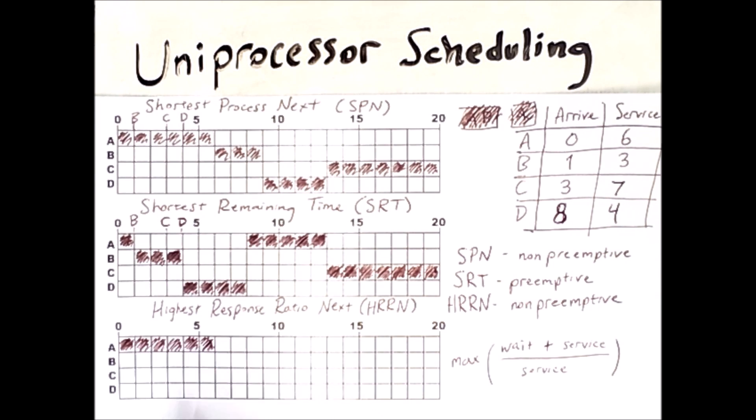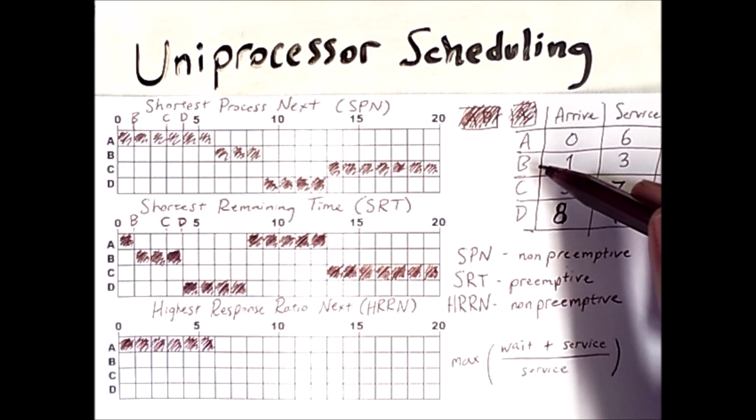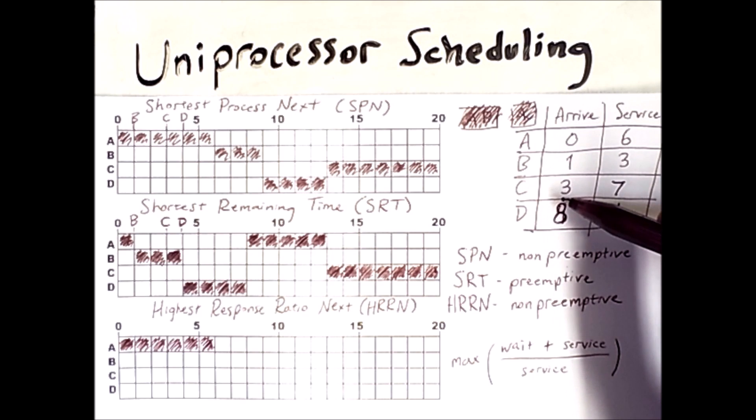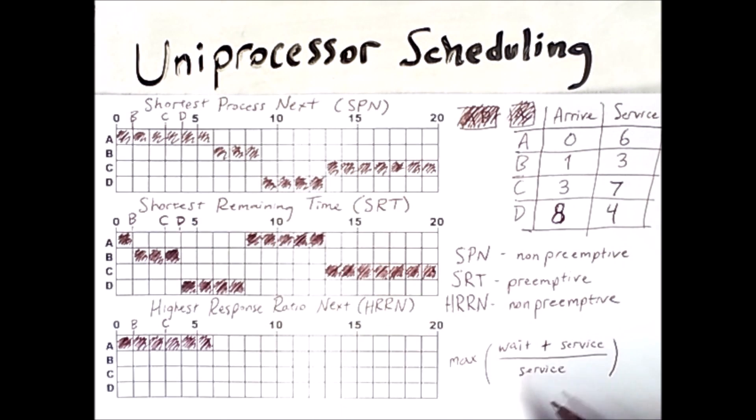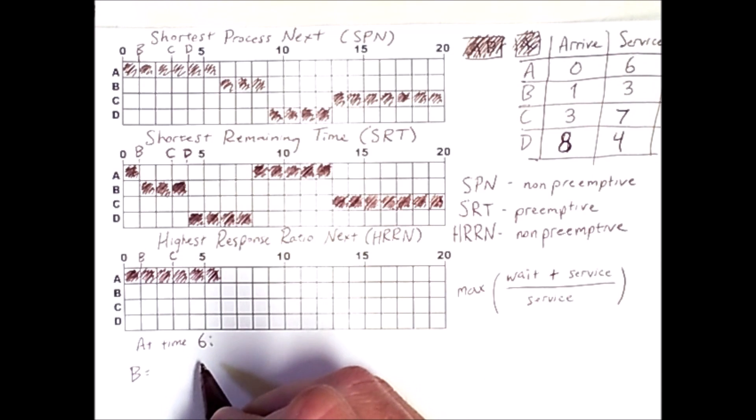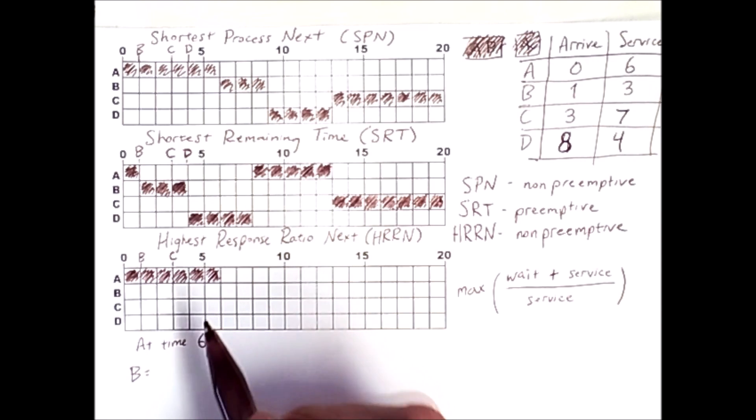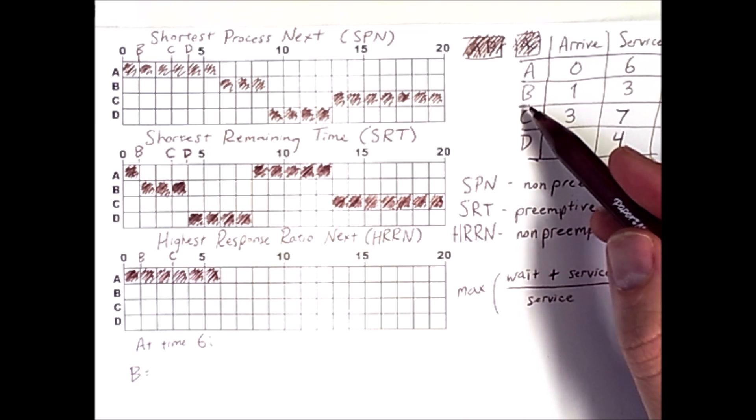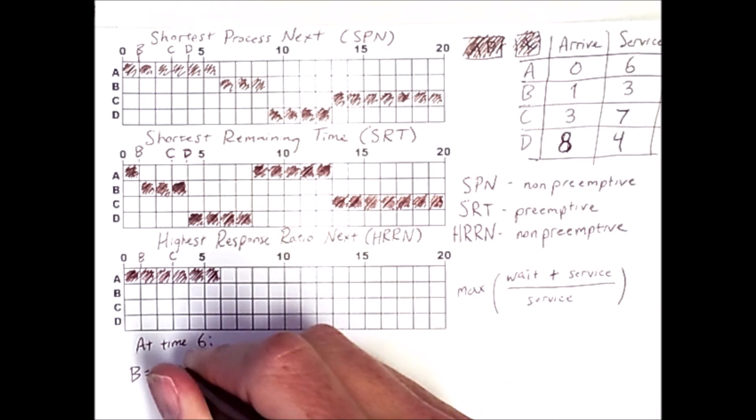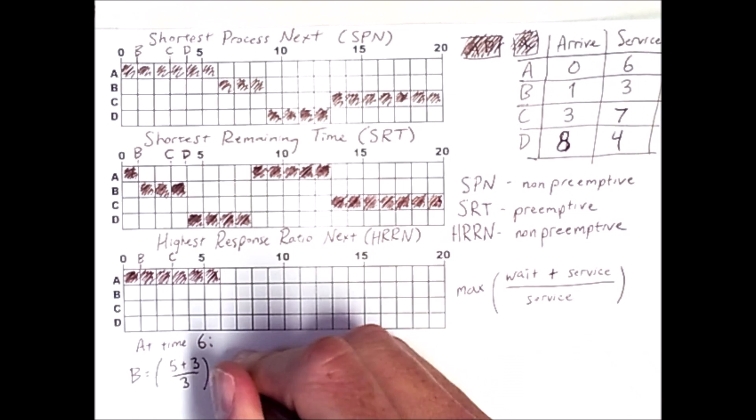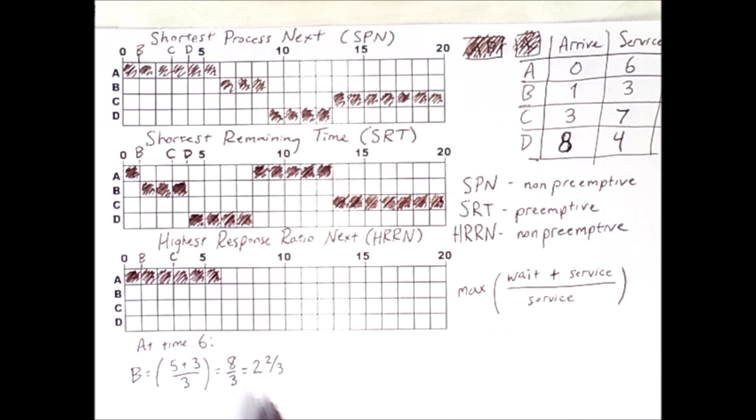It is currently time 6 and process B and C have arrived. So what is the value of this quantity for those processes? So at time 6, B has been waiting for 5 units because B's arrival time is 1 and so 6 minus 1 is 5. Its service time is 3. So this quantity is 2 and 2 thirds.